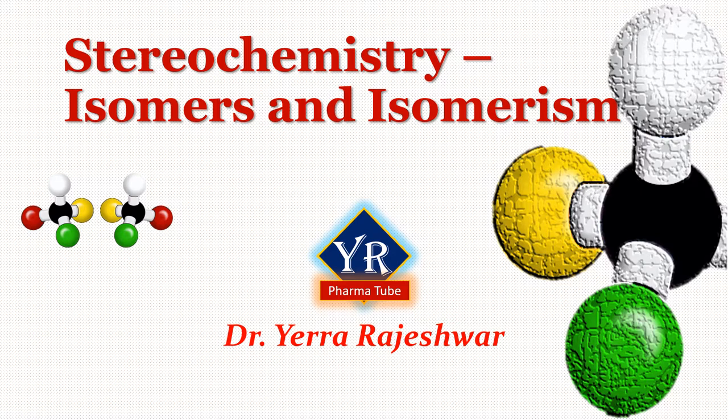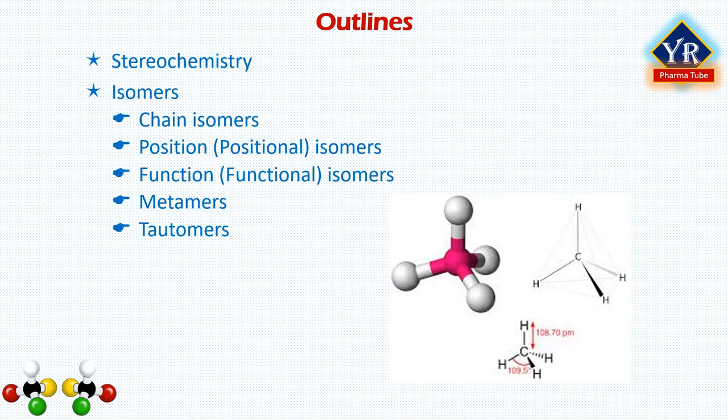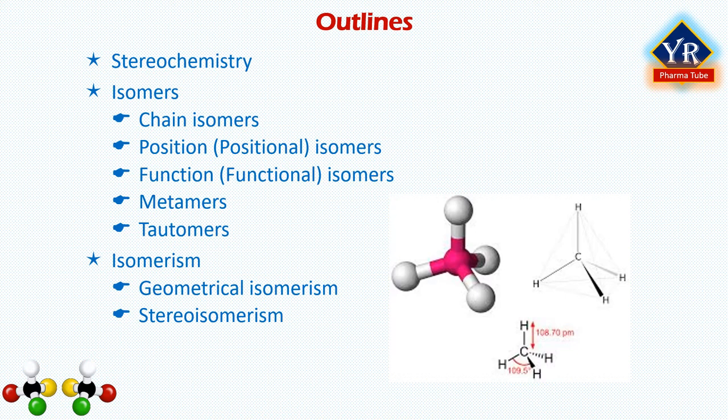These are the outlines of the lecture. In this lecture, you will learn the definition of stereochemistry, the different types of isomers such as chain isomers, position isomers, function isomers, metamers and tautomers. And finally, you will understand the concept of isomerism, more importantly geometrical and stereoisomerism.